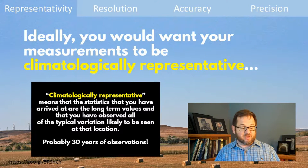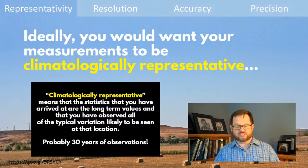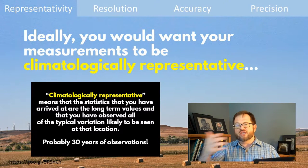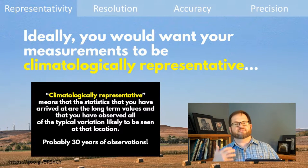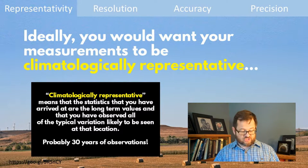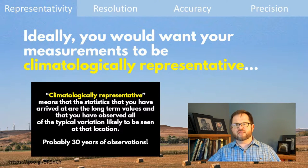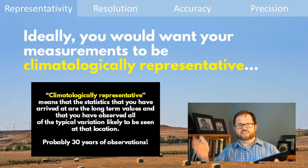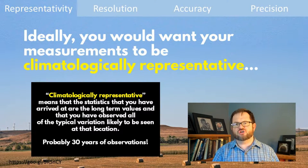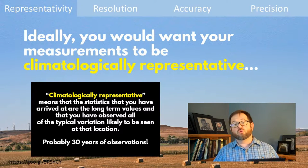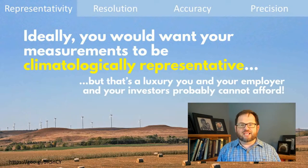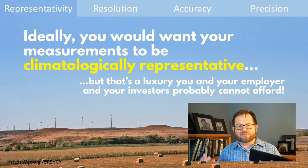Ideally, from a meteorological or climate perspective, what you would want is for your observations to be climatologically representative. That's actually a vocabulary word in the glossary of meteorology — it means the statistics you've gathered are representative long-term values, the very long-term average. Typically in climate studies, when we talk about climatologically representative observations, we're usually talking 30 years, because over a 30-year period you'll have really captured all the meaningful different scales of variability, from interannual variability caused by El Niño and the Southern Oscillation to large-scale slower climate variations like the North Atlantic Oscillation. But waiting 30 years is a luxury you and your investors probably don't have.